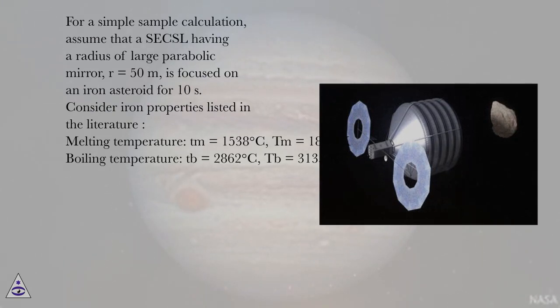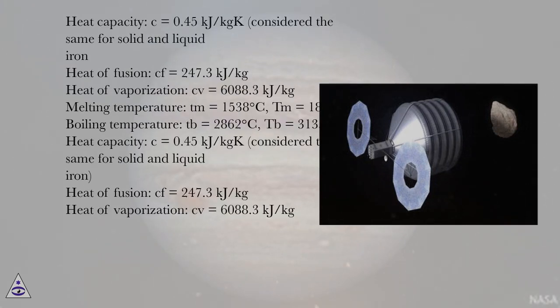Melting temperature: Tm = 1538°C, Tm = 1811 K. Boiling temperature: Tb = 2862°C, Tb = 3135 K. Heat capacity: C = 0.45 kJ/kgK, considered the same for solid and liquid iron. Heat of fusion: Cf = 247.3 kJ/kg. Heat of vaporization: Cv = 6088.3 kJ/kg.